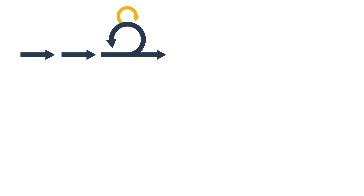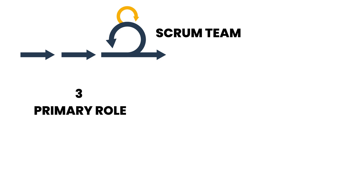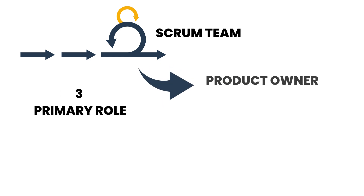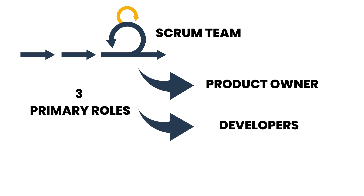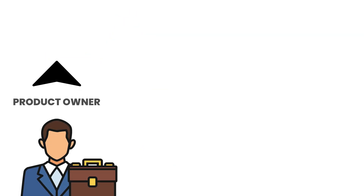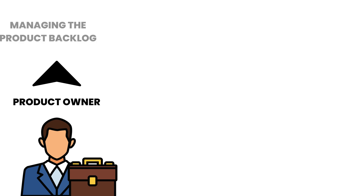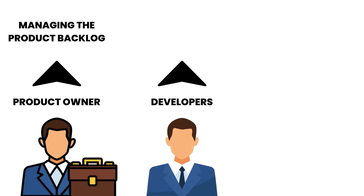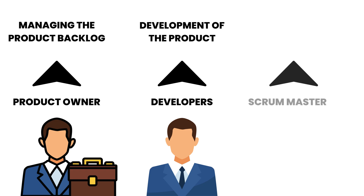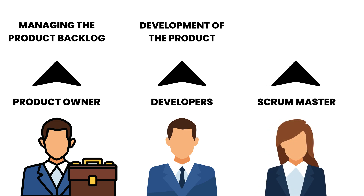In Scrum, the team responsible for developing and delivering the product is called the Scrum Team, which comprises three primary roles — the product owner, the developers, and the Scrum Master. The product owner is responsible for managing the product backlog and ensuring that the team is working on the most valuable tasks. The developers are responsible for the actual development of the product, while the Scrum Master ensures that the Scrum framework is being followed and that the team is working effectively together.